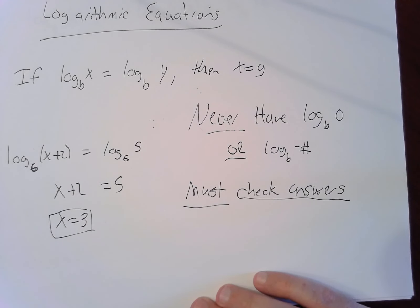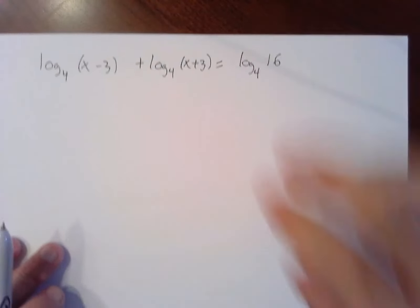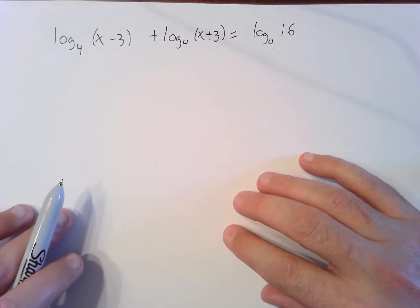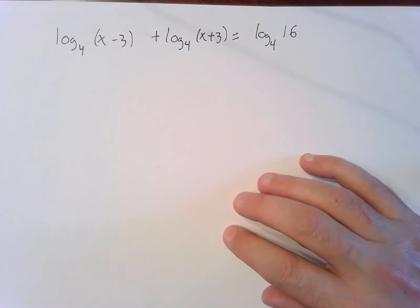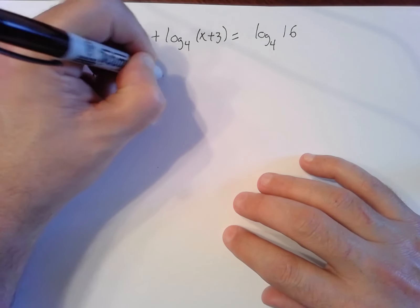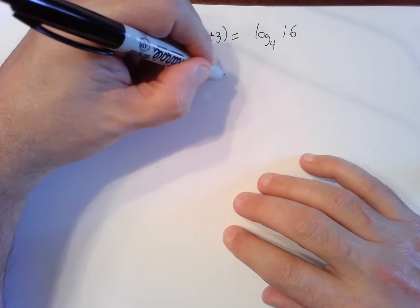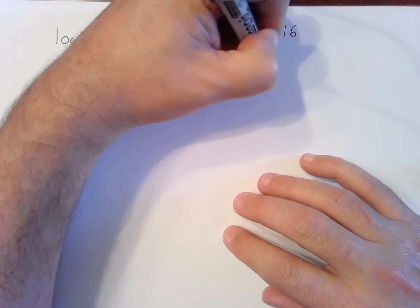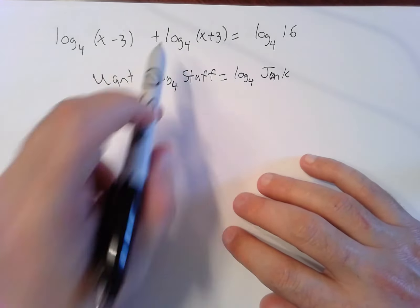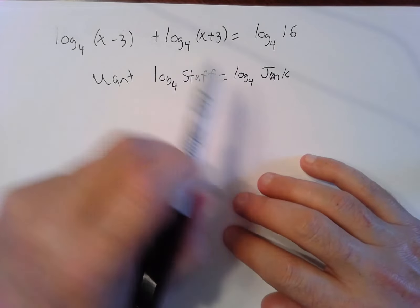Okay, another example. Let's take it up a notch here. Say I have this complicated looking log equation. Your instinct is just to go through and cancel out all the logs. You can't do that. I need this to look like I want log base four of some stuff equals log same base four of some other junk. I need to squish these logs together.